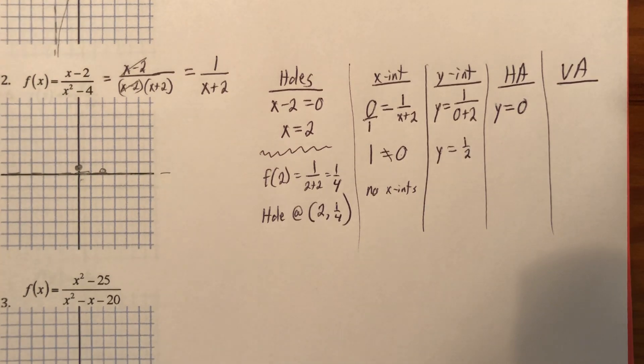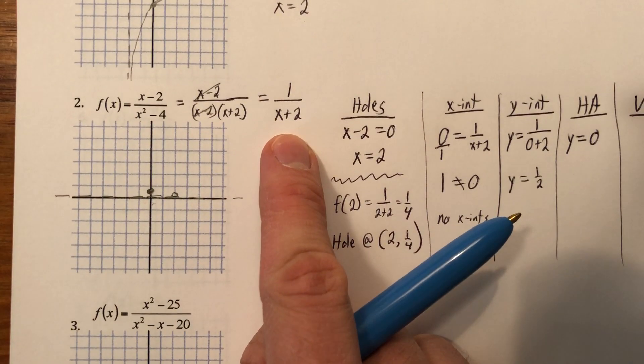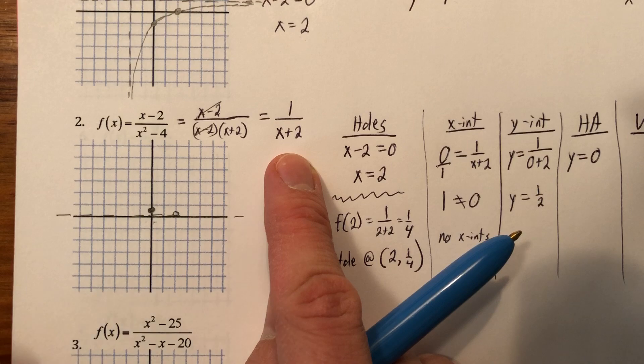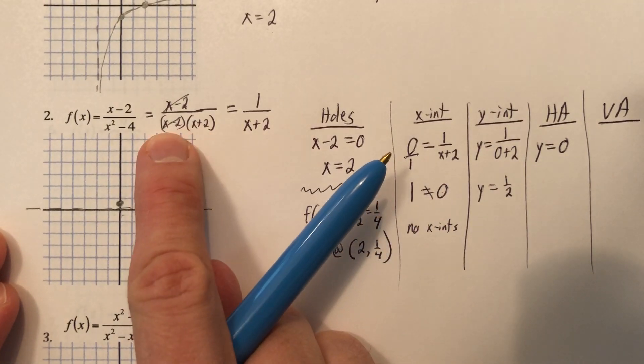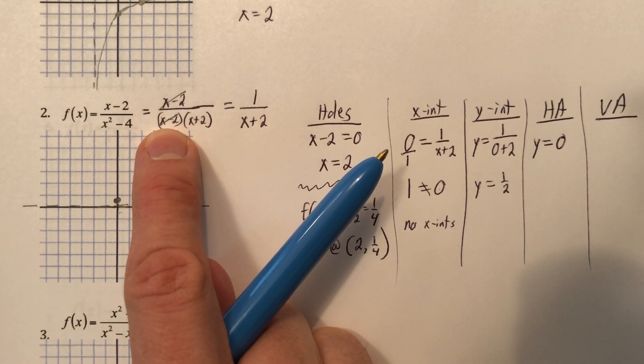And then my vertical asymptote is where my denominator equals zero. Now, here's the catch. It's not necessarily where my denominator equals zero. It's where my reduced denominator equals zero. So you could say, oh, well, you have a vertical asymptote at the opposite of this and the opposite of that. No, you canceled that one out.